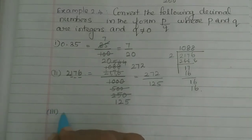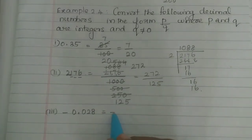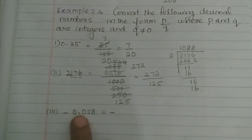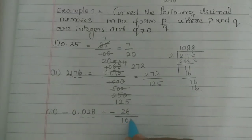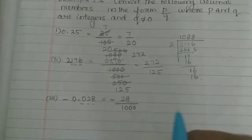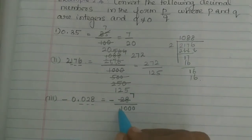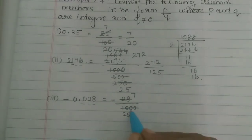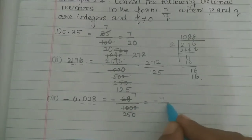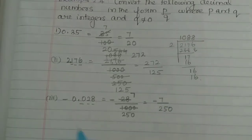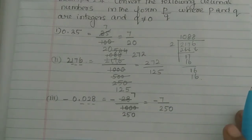The next question is minus 0.028. We write this as minus 28 by 1000. Simplifying by dividing both by 4 gives minus 7 by 250. So minus 0.028 equals minus 7 by 250. That is all.